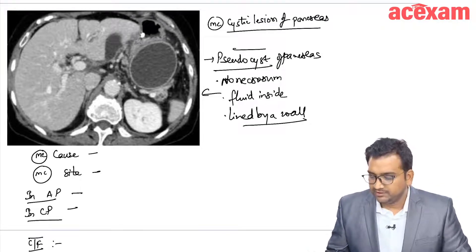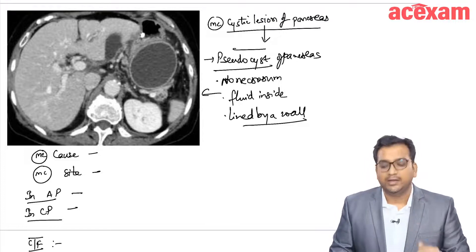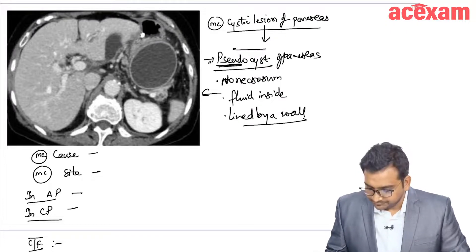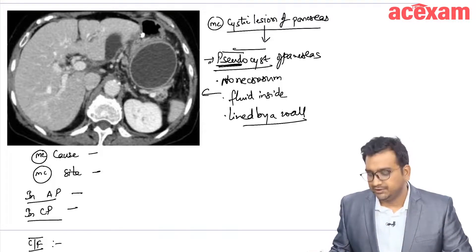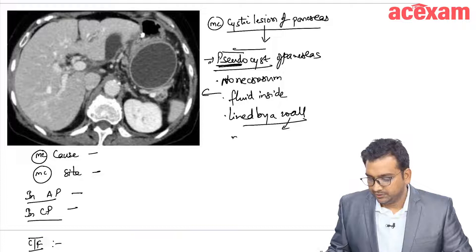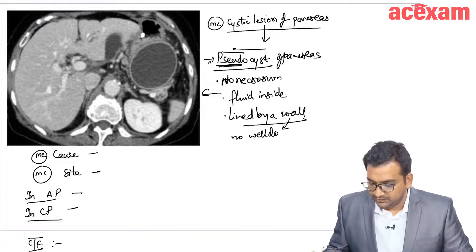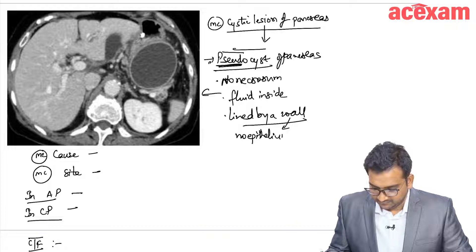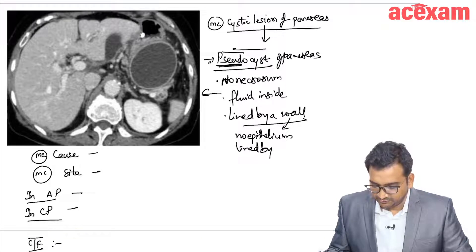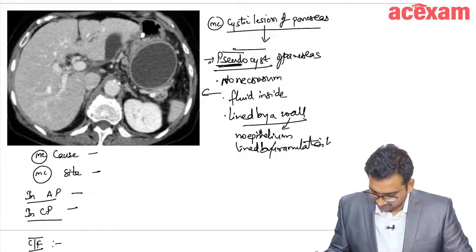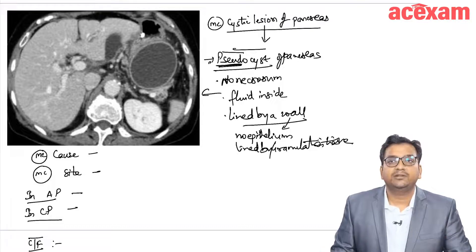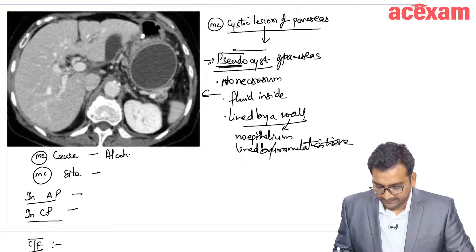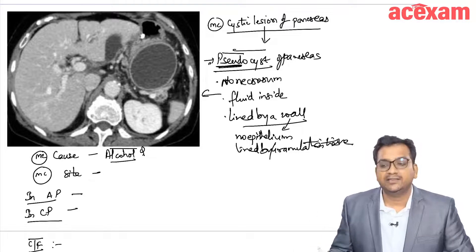Most common cystic lesion of pancreas is pseudocyst. Why it is called a pseudocyst? Because it is a well defined wall but there is no epithelium here, no epithelium. It is lined by granulation tissue. Most common cause is alcohol. Most common site is lesser sac.